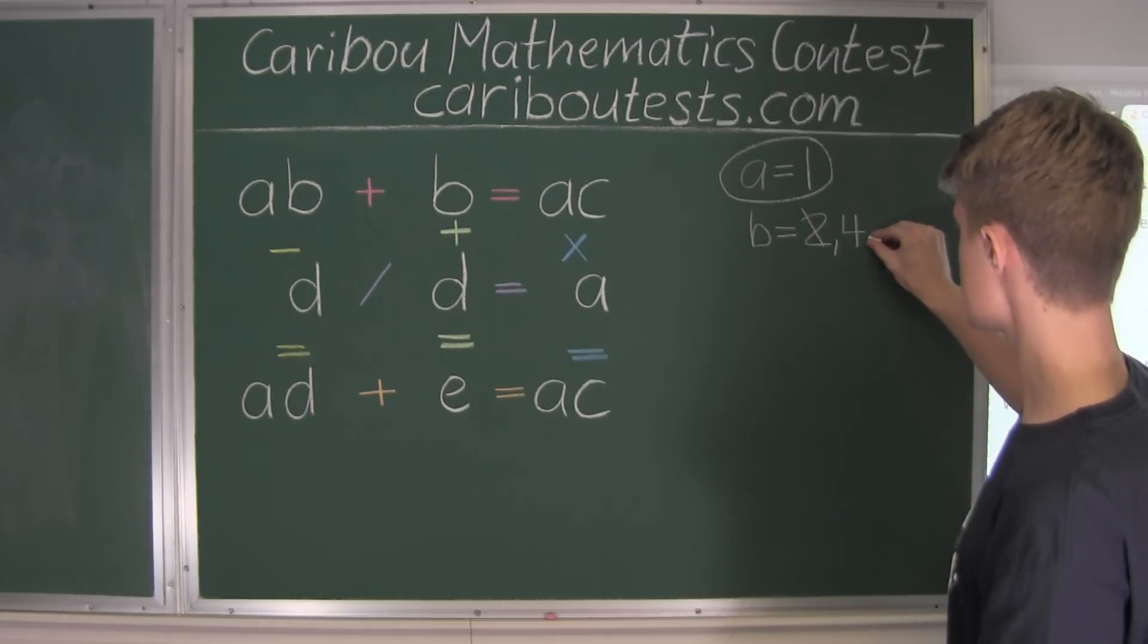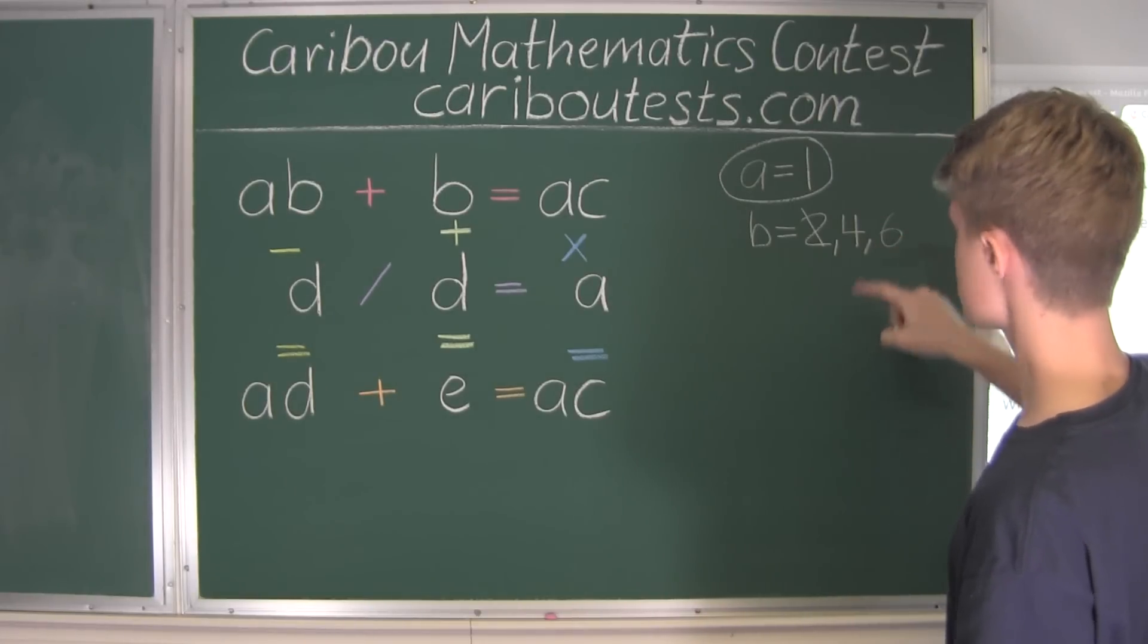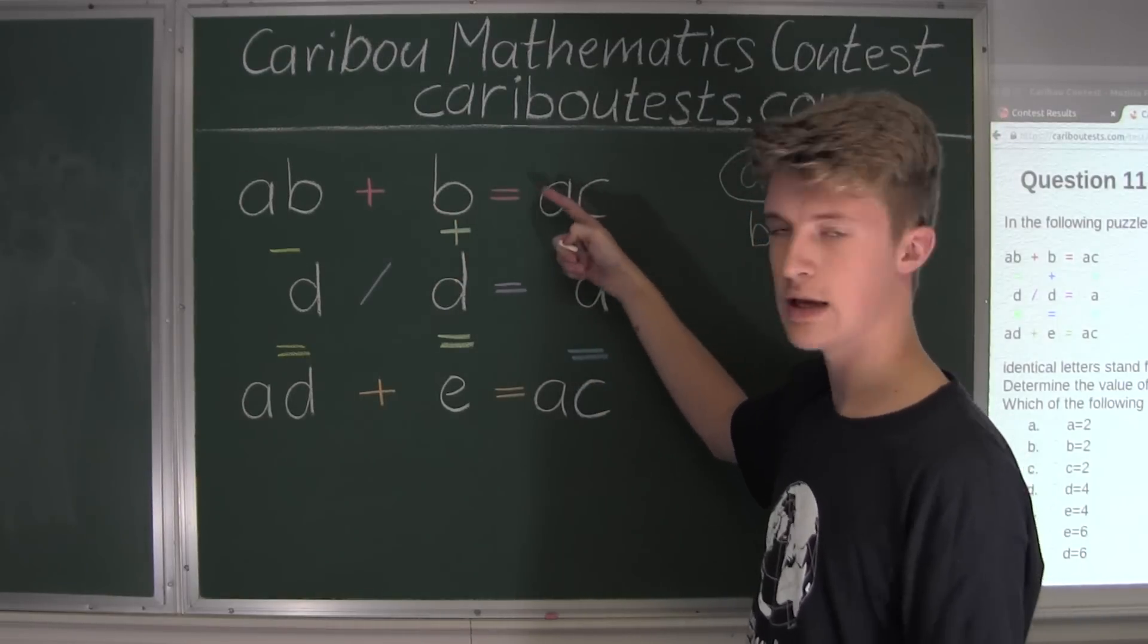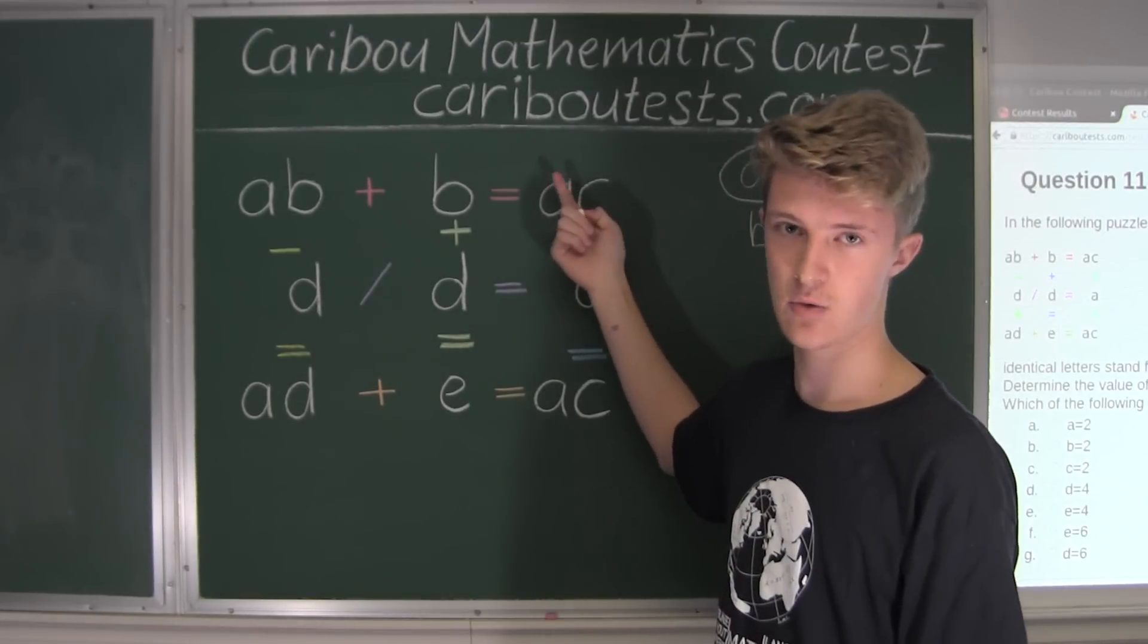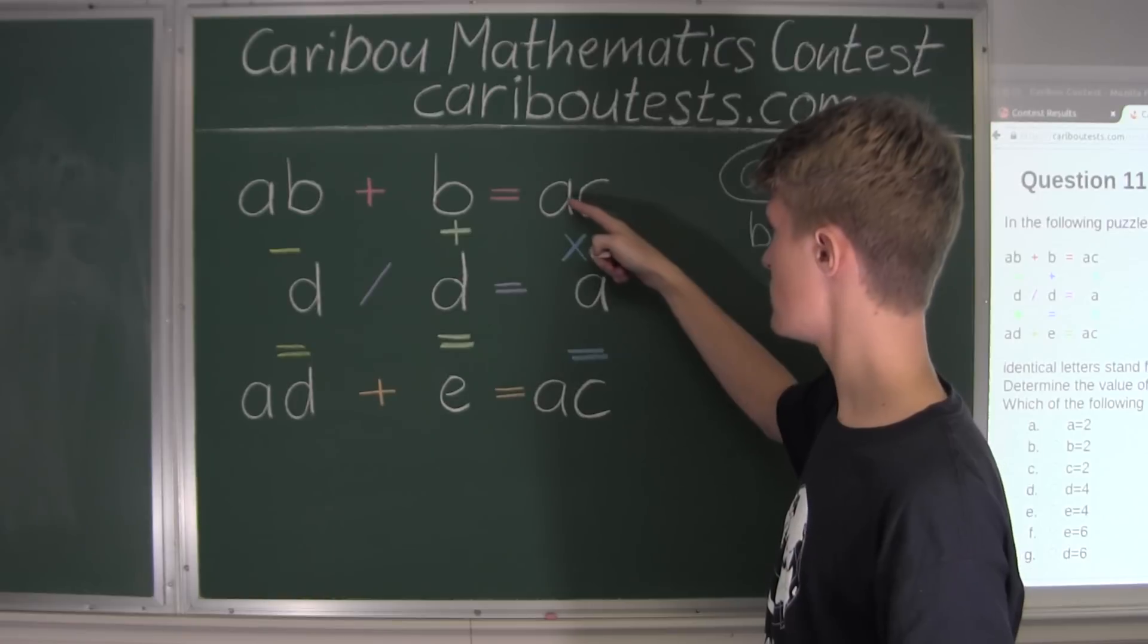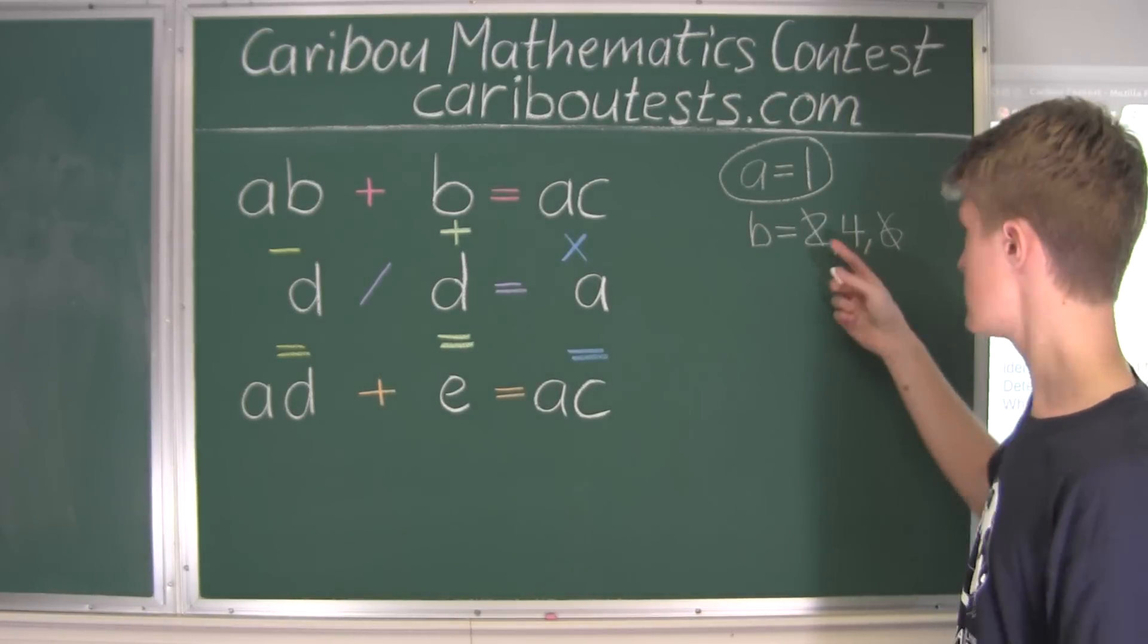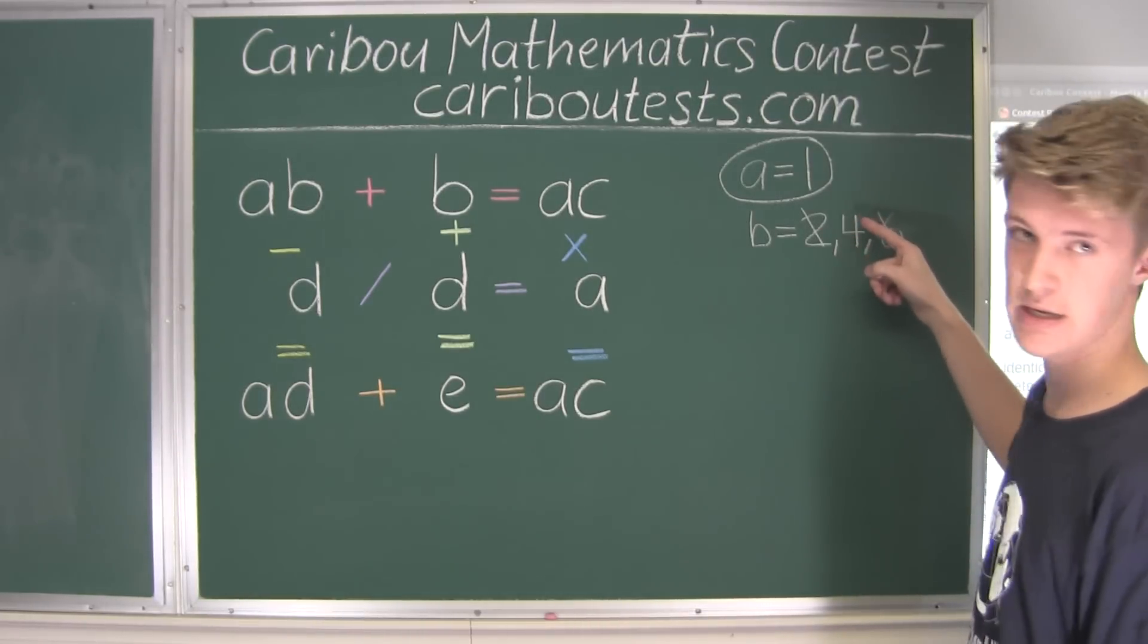Now let's try the next even number is 6. So we have 16 plus 6 equals, oh well, that would equal 22. But we know A has to equal to 1. So therefore, if we have 16 plus 6 is 22, this would not work. Therefore, B cannot equal to 6, and therefore can't equal to 8 or anything higher. Therefore, B must be equal to 4.